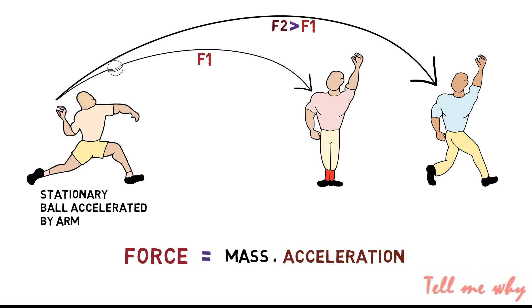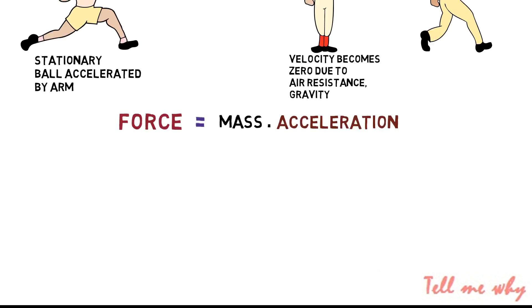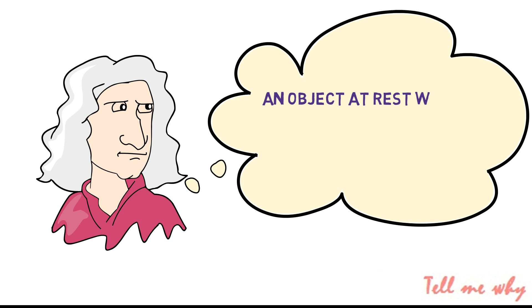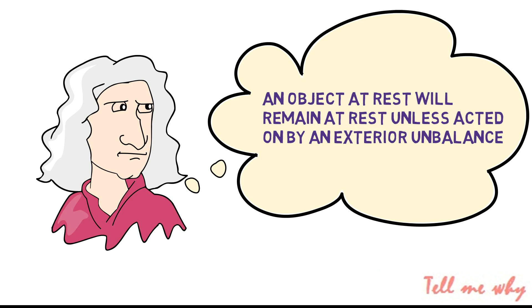At the point you let go, there is no more acceleration caused by your arm because the ball and the arm are no longer connected. But the ball keeps moving because it has a velocity, and it will keep moving until an exterior force decelerates it and lowers the velocity to zero. This is Sir Isaac Newton's first law of motion. An object at rest will remain at rest unless acted on by an unbalanced force. An object in motion continues in motion with the same speed in the same direction unless acted upon by an unbalanced force.